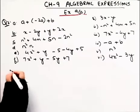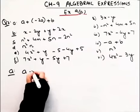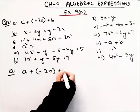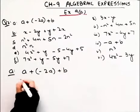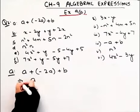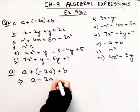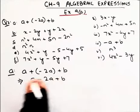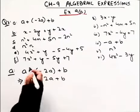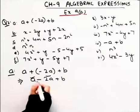Starting with the A part: A + (–2A + B). So how do we write this in simplified form? A + (–2A + B), if I simplify this with the horizontal method, these two are like terms, and B is unlike.